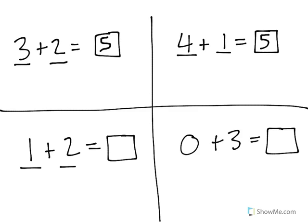1 plus 2 more is equal to 3, and if we start with 0 and then add 3, we have a total of 3.